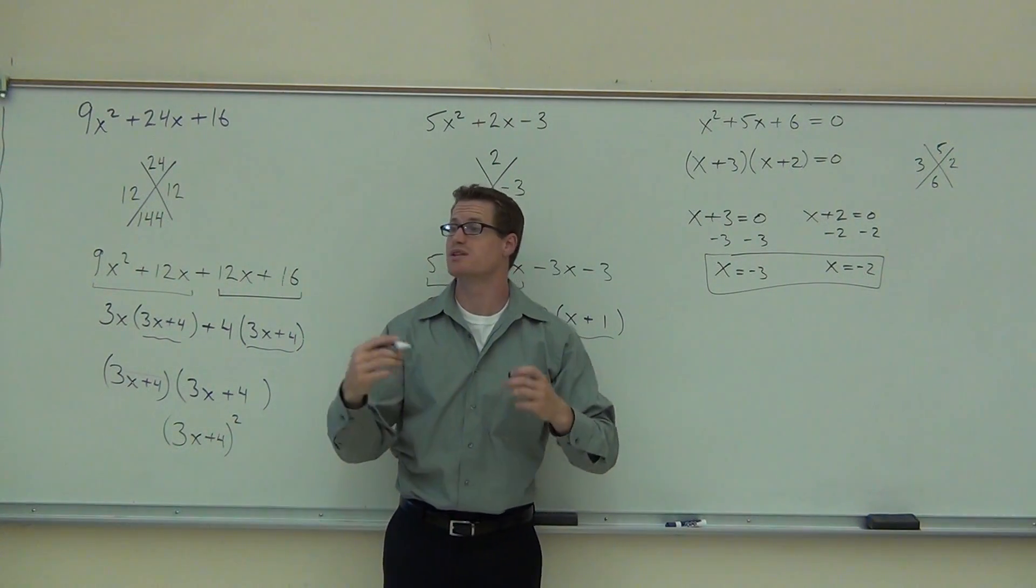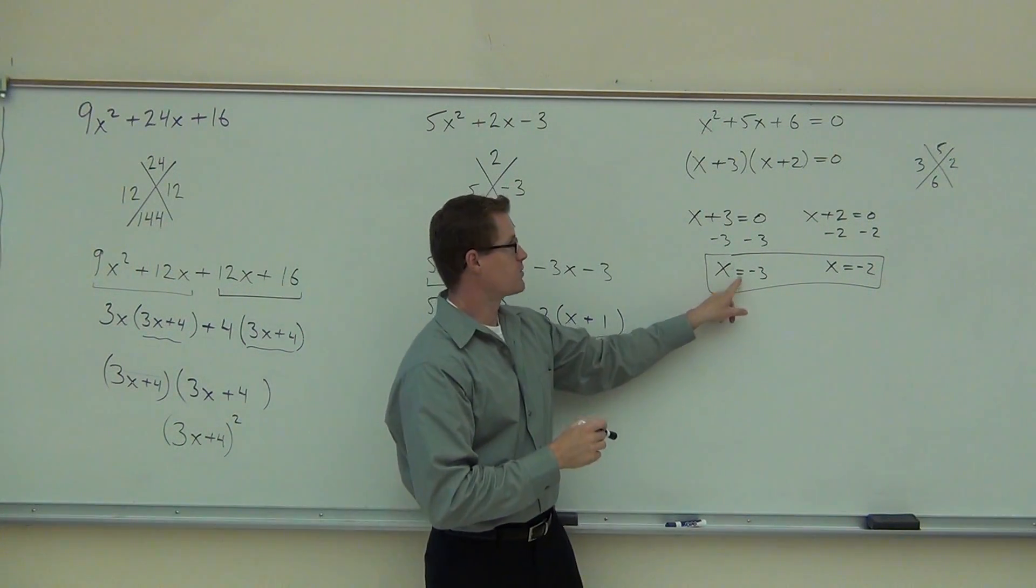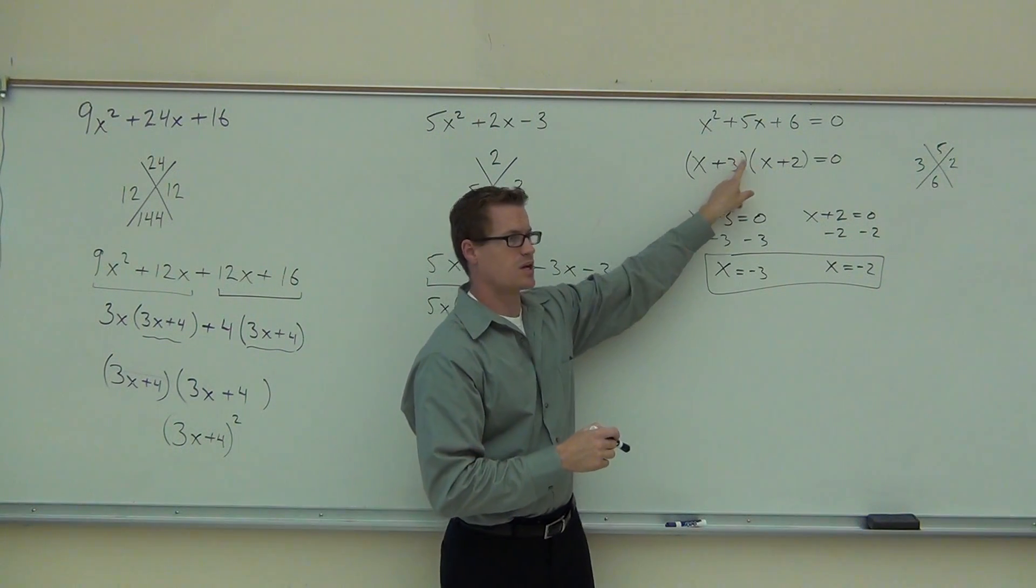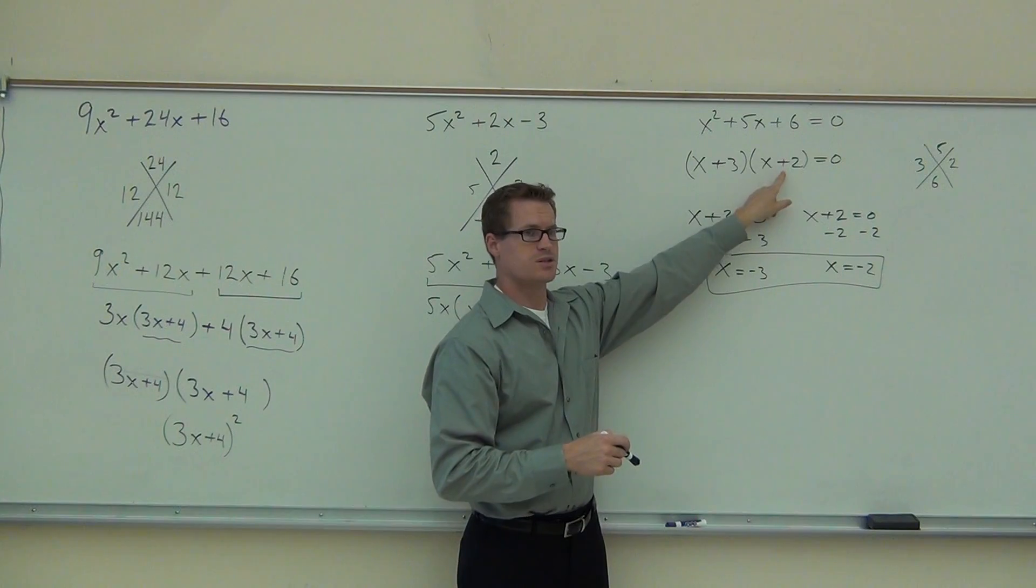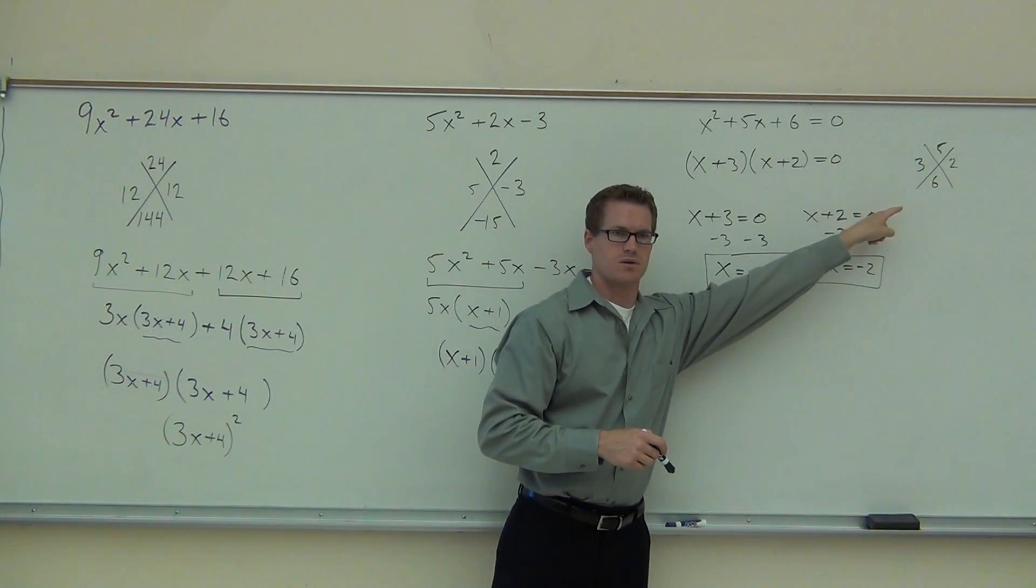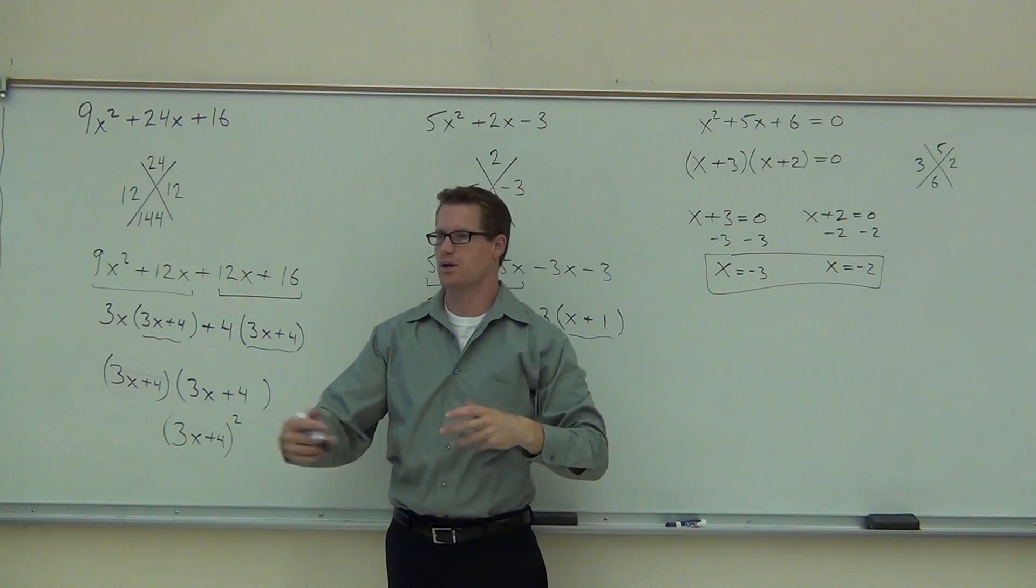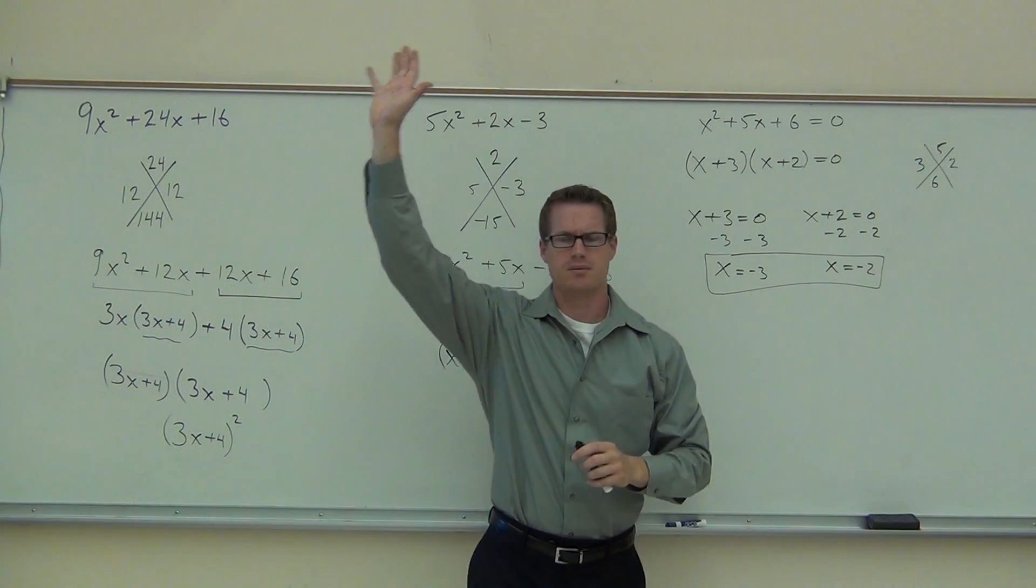And you know what? We've got two solutions. Both of them are going to work. The reason why they work is because if you plug this in here, it creates 0. 0 times anything is 0. Plug in a negative 2 here, that creates 0. 0 times anything is 0. That's how we're going to use this in our equation. Tell me if you understood today. You're pretty good about it.